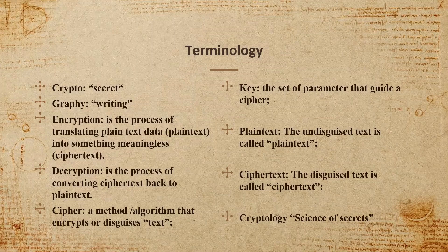Here we have some terminology. 'Crypto' means secret and 'graphy' means writing. Encryption is the process of translating plain text data into something meaningless, which we call cipher text. Decryption is the process of converting cipher text back to plain text, or something meaningful. A cipher is a method or algorithm that encrypts or disguises text to make it hidden.